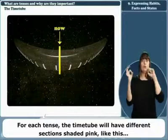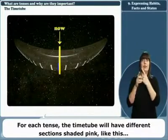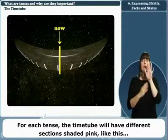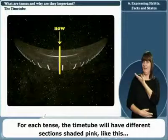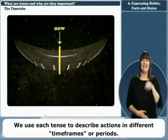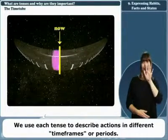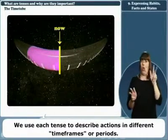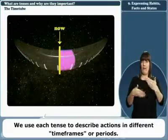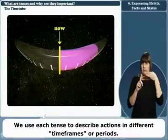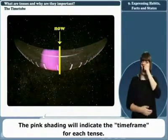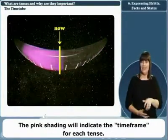Now for each tense, the time tube will appear with different sections shaded pink, like this. The pink shading indicates the time frame for which a particular tense can be used.